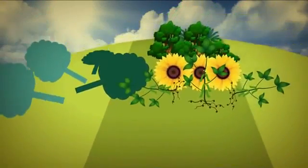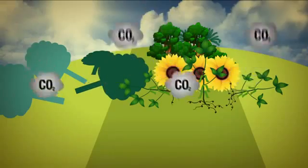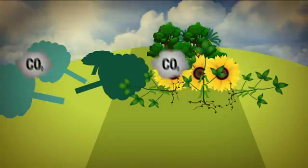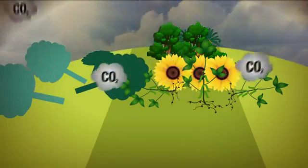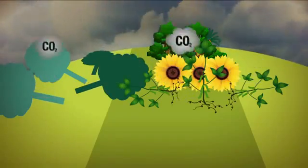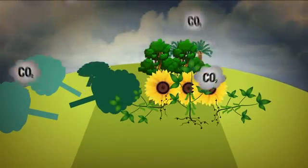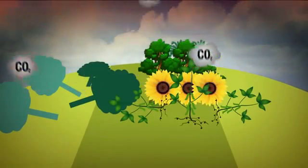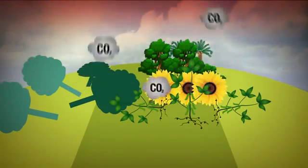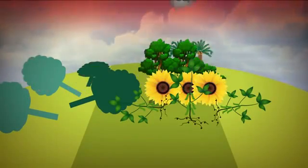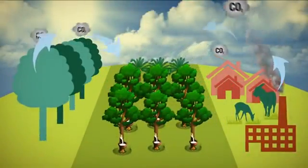But when people cut down trees for various reasons, carbon dioxide is released from these trees. If more carbon dioxide is released into the atmosphere, it increases the level of greenhouse gases, resulting in global warming. This would be bad for the environment.